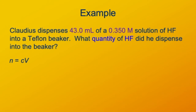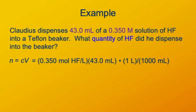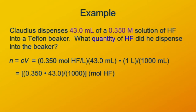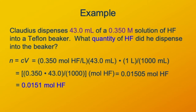We want N, the number of moles: concentration times volume. Concentration is 0.350 moles per liter, volume is 43 milliliters, and the conversion factor 1 liter divided by 1,000 milliliters cancels the liters and milliliters. Separating numbers from units, we have 0.35 times 43 divided by 1,000 in the numerator, leaving units of moles of HF. That calculates to 0.01505 moles, and with three significant digits, our answer is 0.0151 moles of HF.